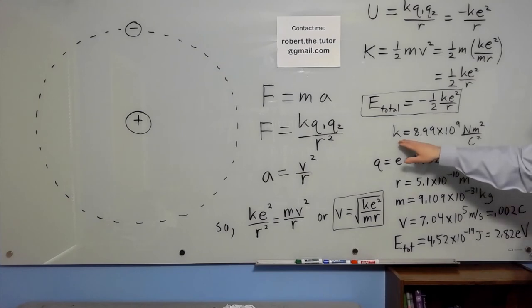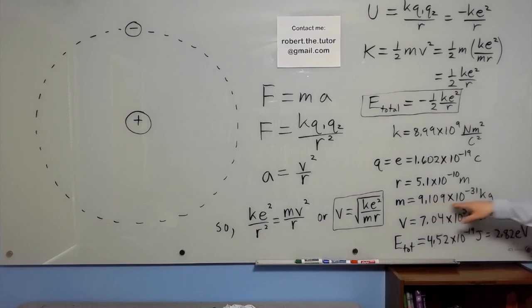Now, plugging in the constants for K, E, Bohr radius of the atom, mass of an electron, we get a velocity of 7.04 times 10 to the fifth meters per second, which is about 0.002 of the speed of light.